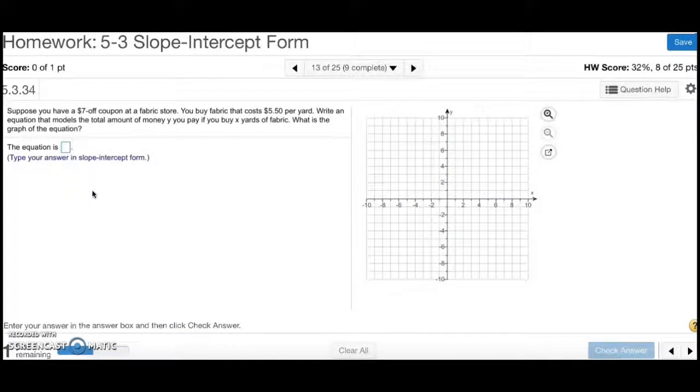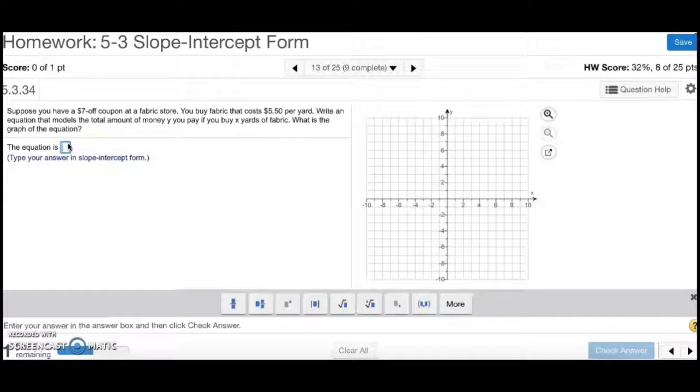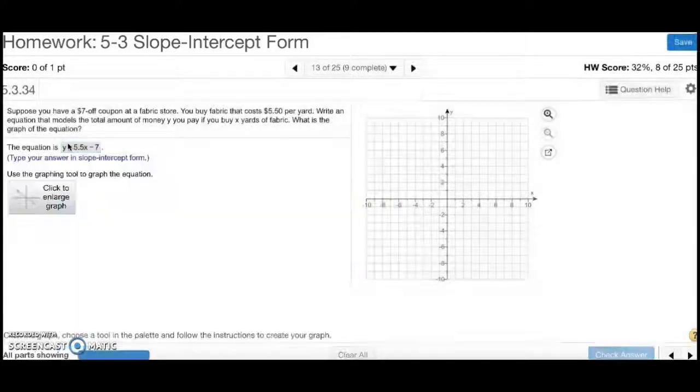Number 13. Suppose you have a $7 off coupon at a fabric store. You buy fabric that costs $5.50 per yard. Write an equation that models the total amount of money y you pay if you buy x yards of fabric. What is the graph of the equation? Well, per yard means that's going to be the rate. So, y equals 5.5x. $7 off means I'm taking off $7, so subtract 7. And that's my equation.